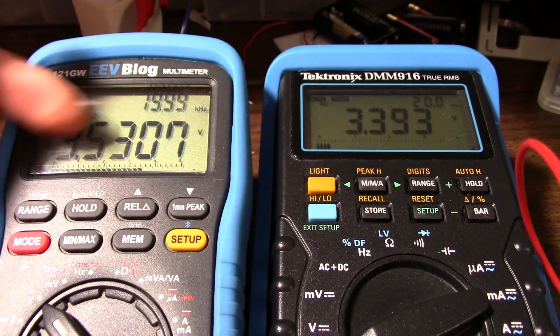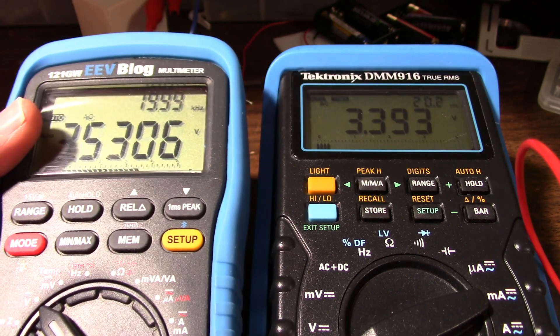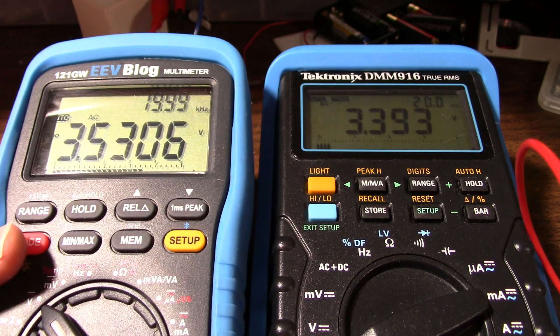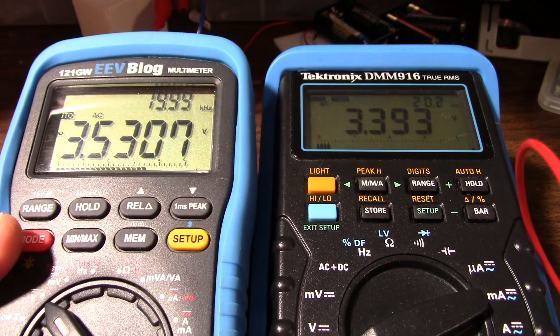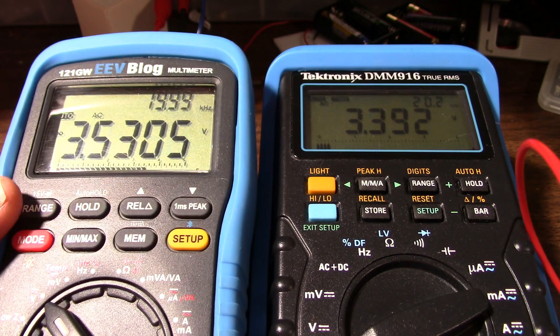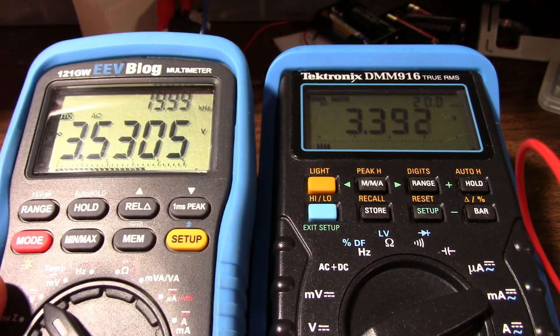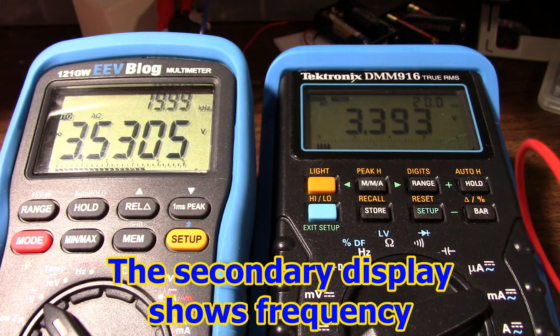I have to check the manual. I wasn't aware this one could measure frequencies that high on the AC volt setting. I thought it was supposed to drop off around 1 kilohertz. So that's a pleasant surprise, I guess.